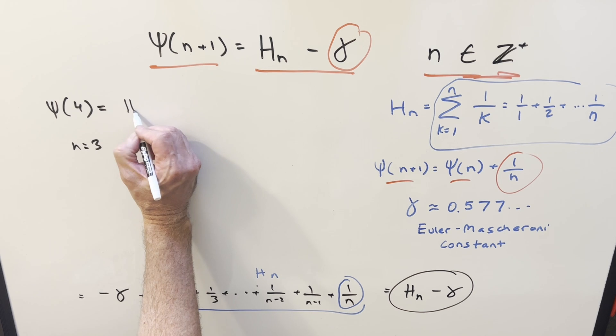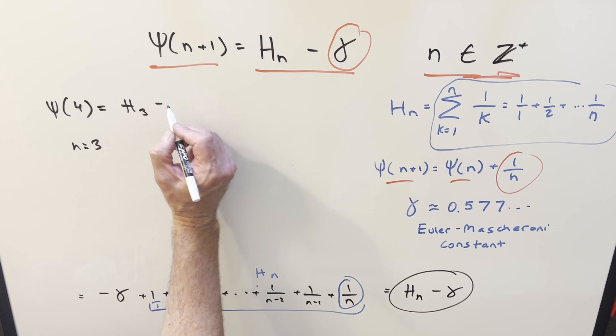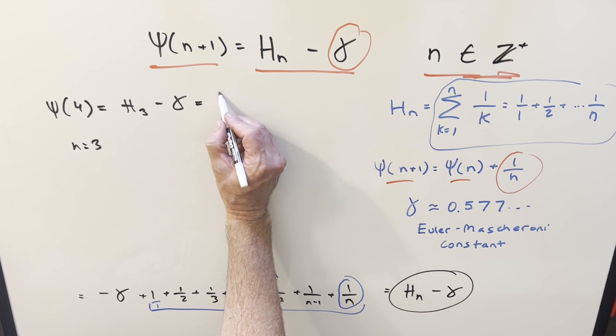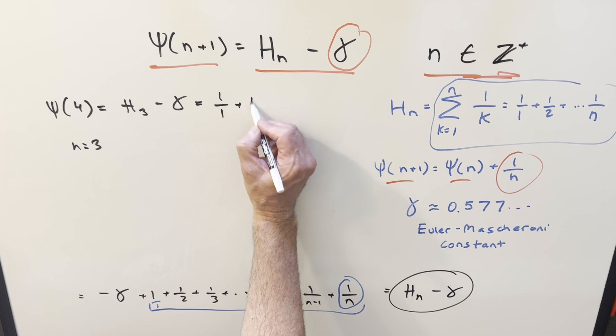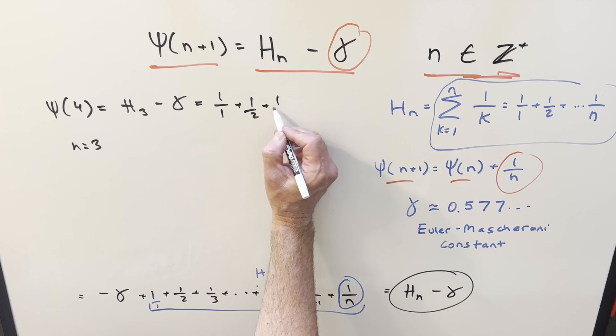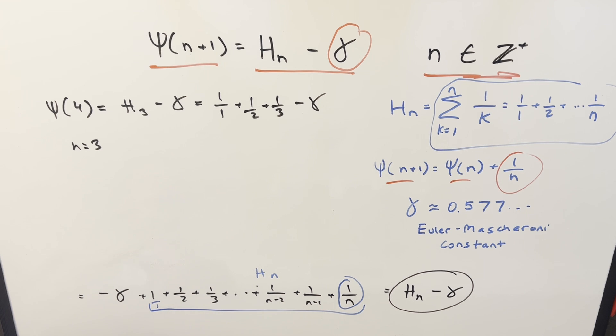So what we're going to want for this is this is going to be h sub 3 minus the constant. But for h sub 3, that's going to be 1 over 1 plus 1 over 2 plus 1 over 3 minus Euler-Mascheroni constant.